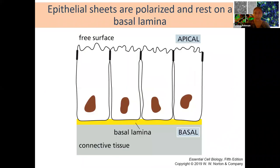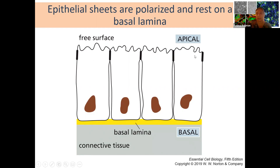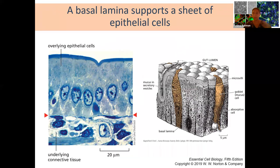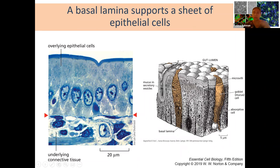In these epithelial sheets, you have polarized cells with very different biology on their apical versus basal side. The apical side is exposed to the elements and interacting with the environment, while the basal side is attached to the basal lamina, keeping them in place. Cells are connected to each other at the apical side but are embedded within the basal lamina, which is above the connective tissue. We looked at examples in the kidney and intestines.